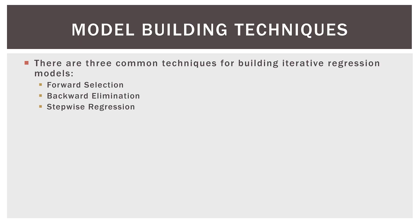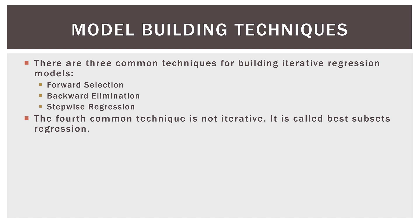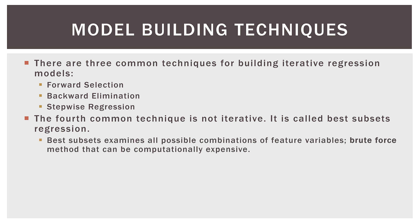There are three common iterative techniques: forwards, backwards, and stepwise. This fourth technique is not iterative — it's called best subsets regression. Best subsets is in its name: it examines all possible combinations of feature variables.